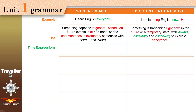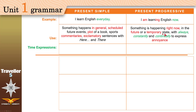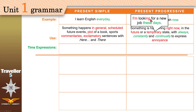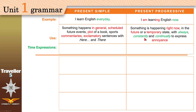Now, present progressive. We use it to describe something that is happening right now — just like I am recording this video right now. Also for the future, like 'I am visiting my parents tomorrow' — it's happening in the future. Or a temporary state: temporary means it happens now, continues for a short period, and then stops in the future. For example: 'I am looking for a new job these days' — I will stop as soon as I find one.